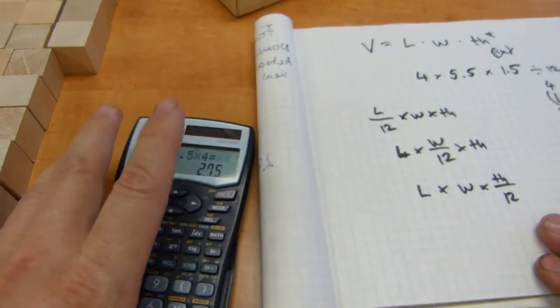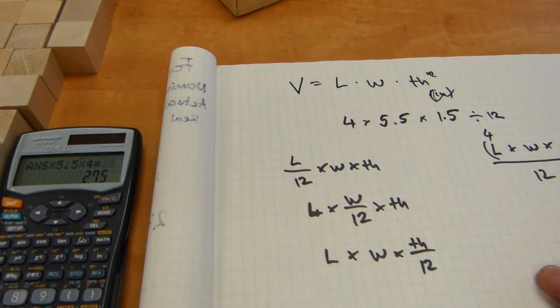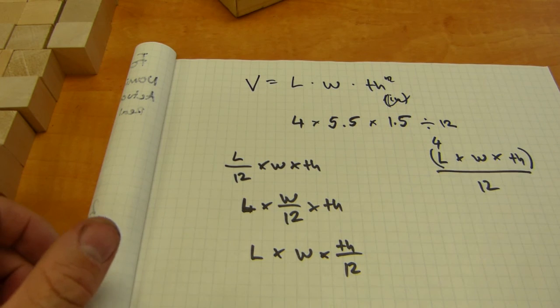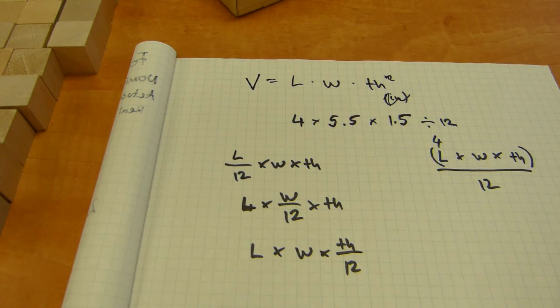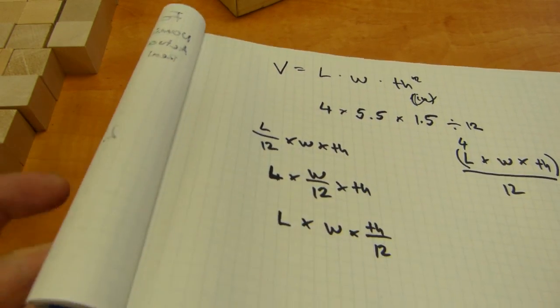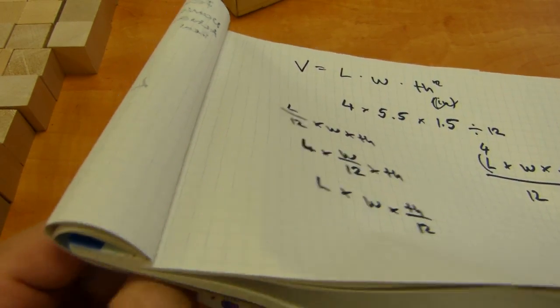So, no matter how your formula looks like in your book, because you can come across different versions in different textbooks, depending on who wrote it, and what kind of computer and word processor they had. Either which way, this one works. With a single division by 12, and multiplying the length in feet, the width and thickness in inches. It's gonna work out. So, that's all I have to say about board foot calculations.